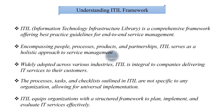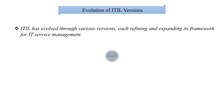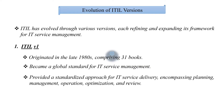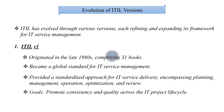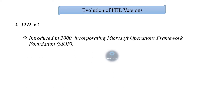ITIL equips organizations with a structured framework to plan, implement, and evaluate IT services effectively. ITIL has evolved through various versions, each refining and expanding its framework for IT service management. The first version, ITIL v1, originated in the late 1980s, comprising 31 books, and became a global standard for IT service management. It provided a standardized approach for IT service delivery encompassing planning, management, operation, optimization, and review. ITIL v1's goal was to promote consistency and quality across the IT project life cycle.